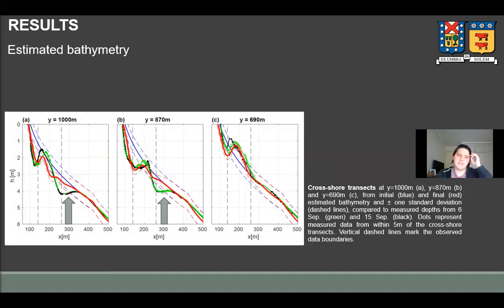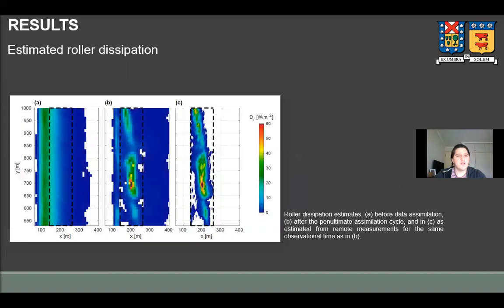However, there's a prominent mismatch at the secondary terrace, around 300 meters offshore. To understand this region of low skill, we analyzed the raw dissipation estimates shown here. Figure A shows the model prediction before data assimilation. Figure B is what we got after the penultimate assimilation cycle. And C, what is estimated from remote measurements for the same model time. If we focus on the seaward boundary of remote data, we can see that initially the model predicts a little dissipation there. And that observations are also near zero or zero in that region.